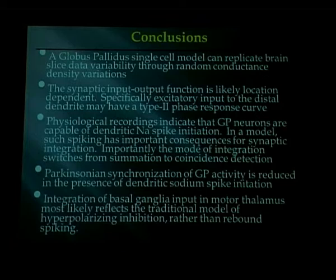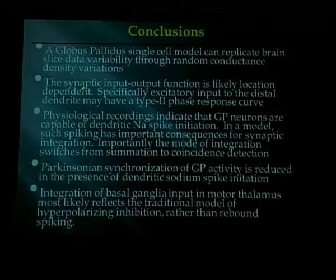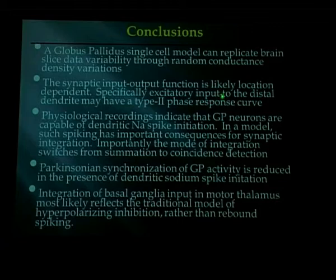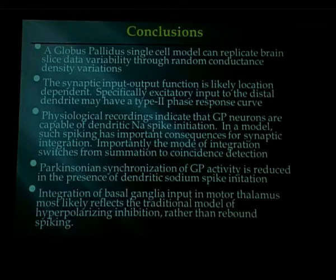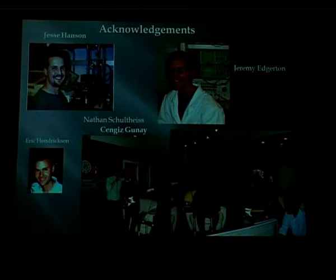As conclusions: globus pallidus single-cell models can replicate brain slice data variability through random conductance densities. The synaptic input-output function is likely location dependent, and specifically excitatory input to the distal dendrite gives type 2 phase response curves. Physiological recordings indicate GP neurons are capable of dendritic sodium spike initiation, and in the model such spiking switches the neuron from being a summator to a coincidence detector. Parkinsonian synchronization is reduced in the presence of dendritic sodium spike initiation. Integration of basal ganglia input in motor thalamus most likely reflects traditional hyperpolarizing inhibition rather than rebound spiking.